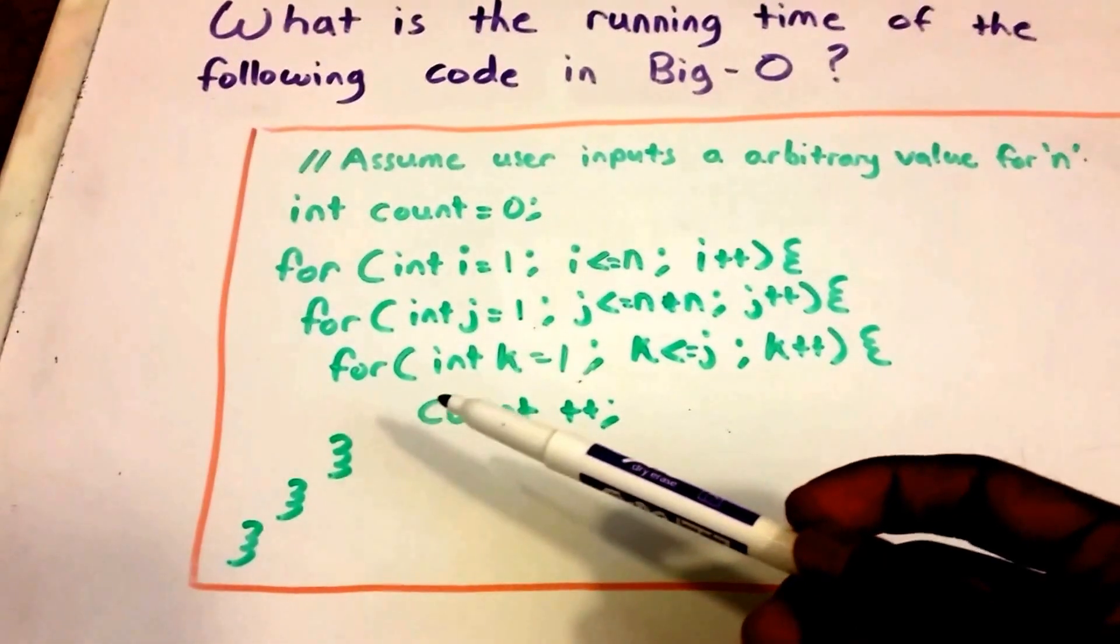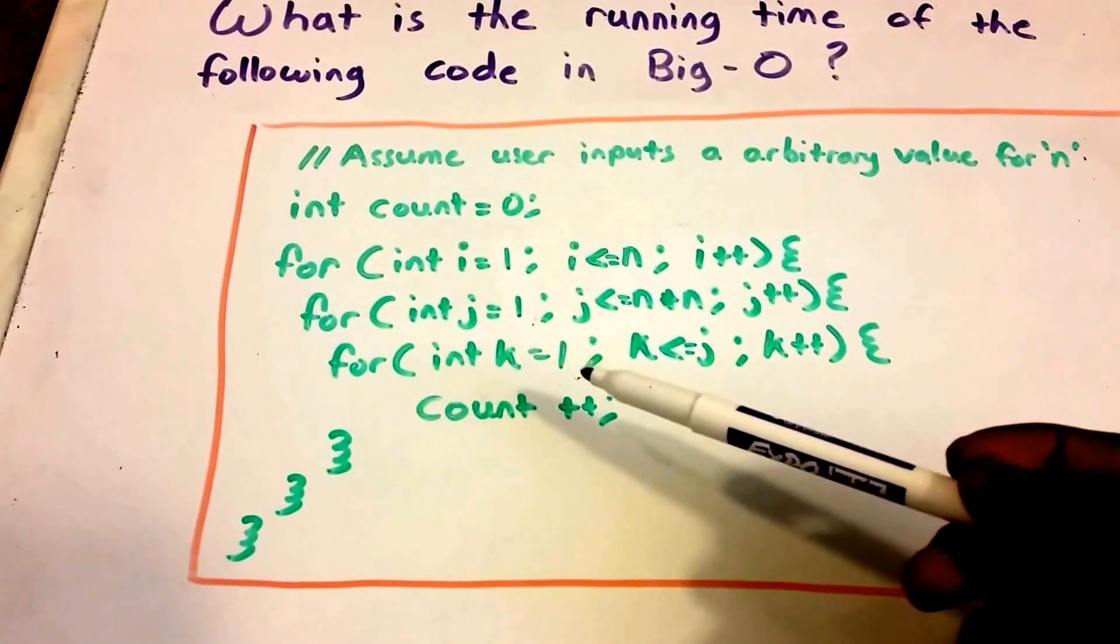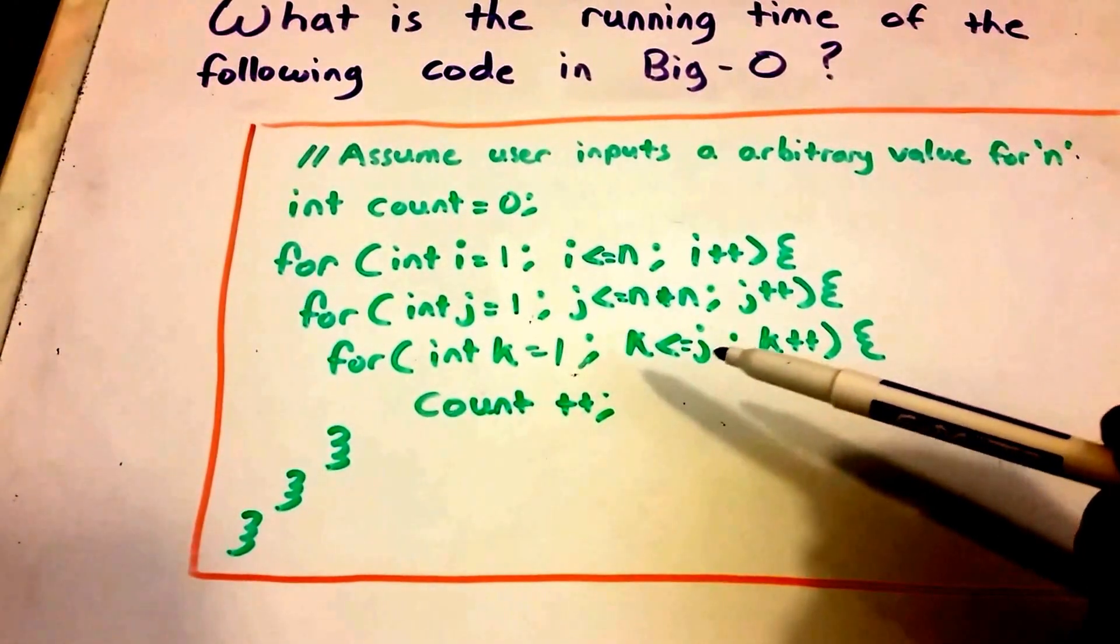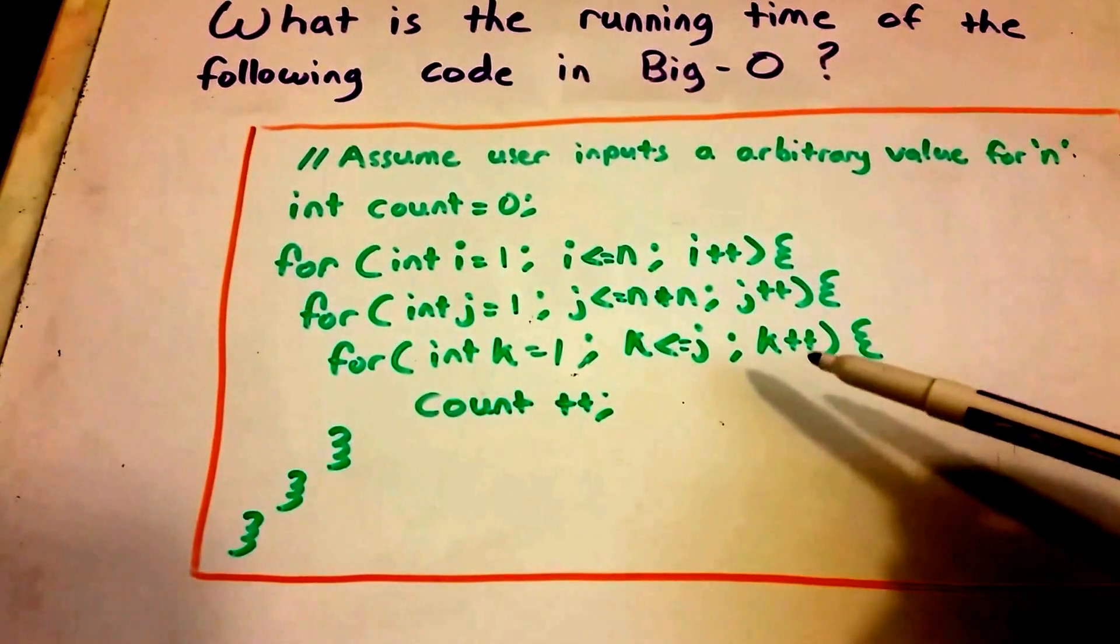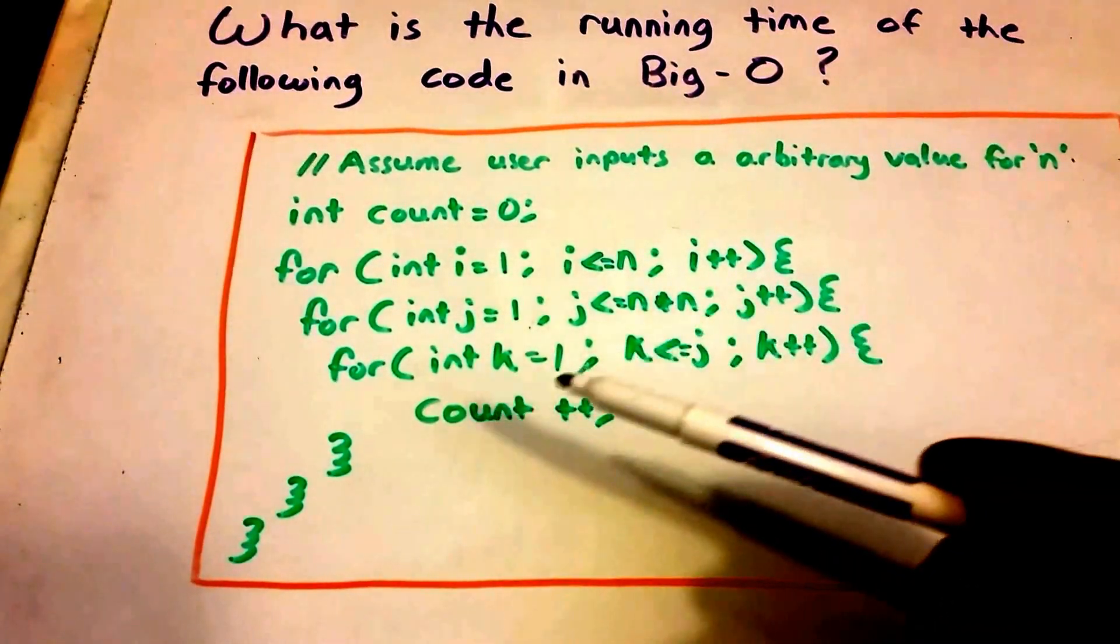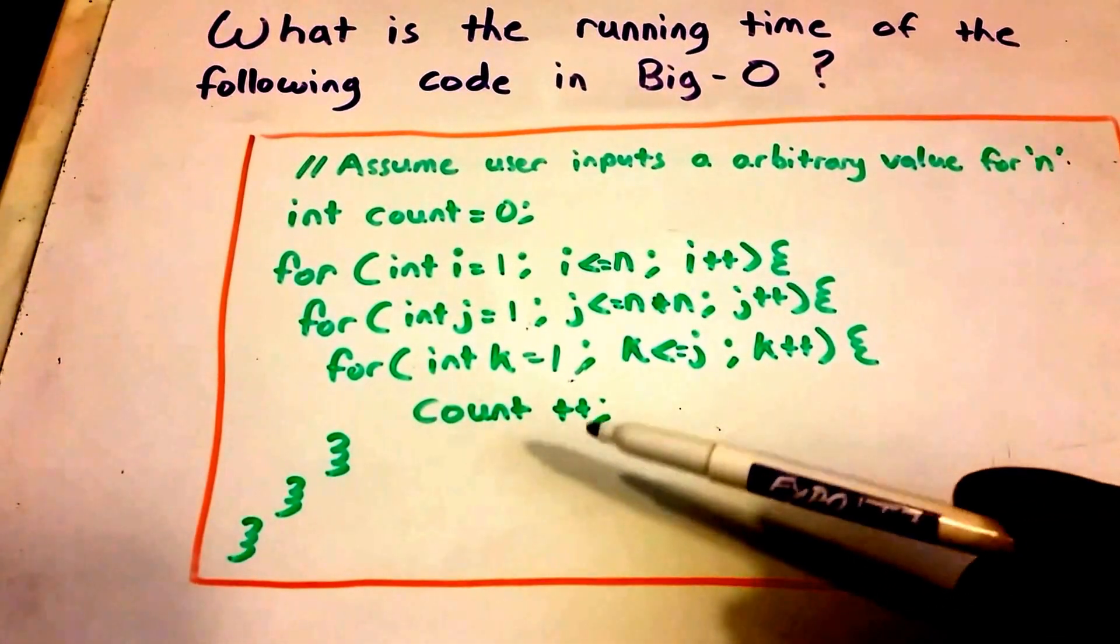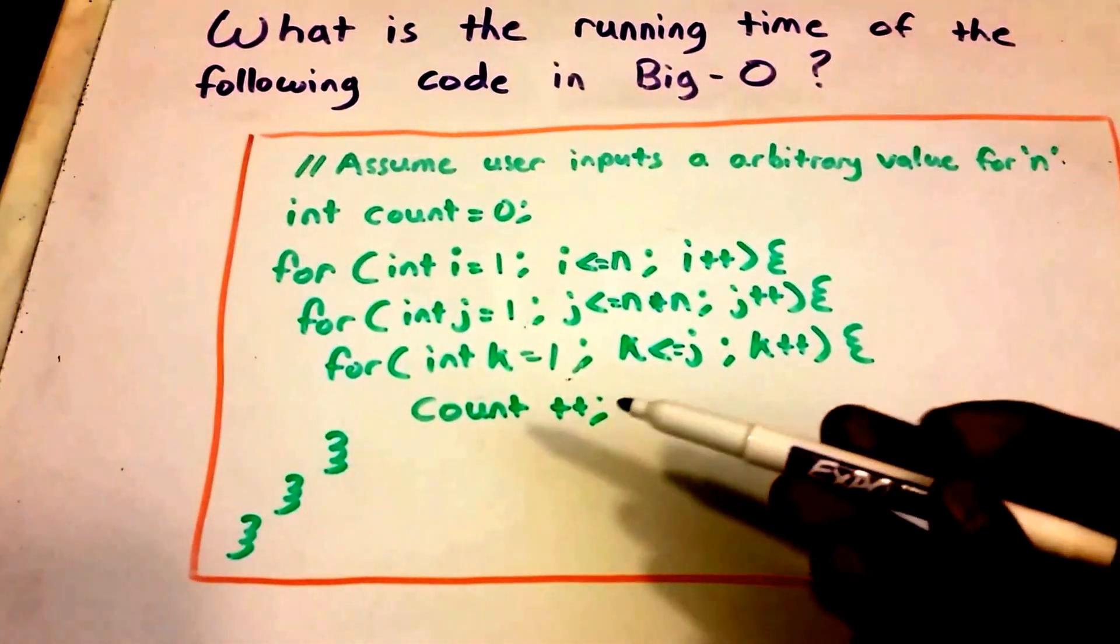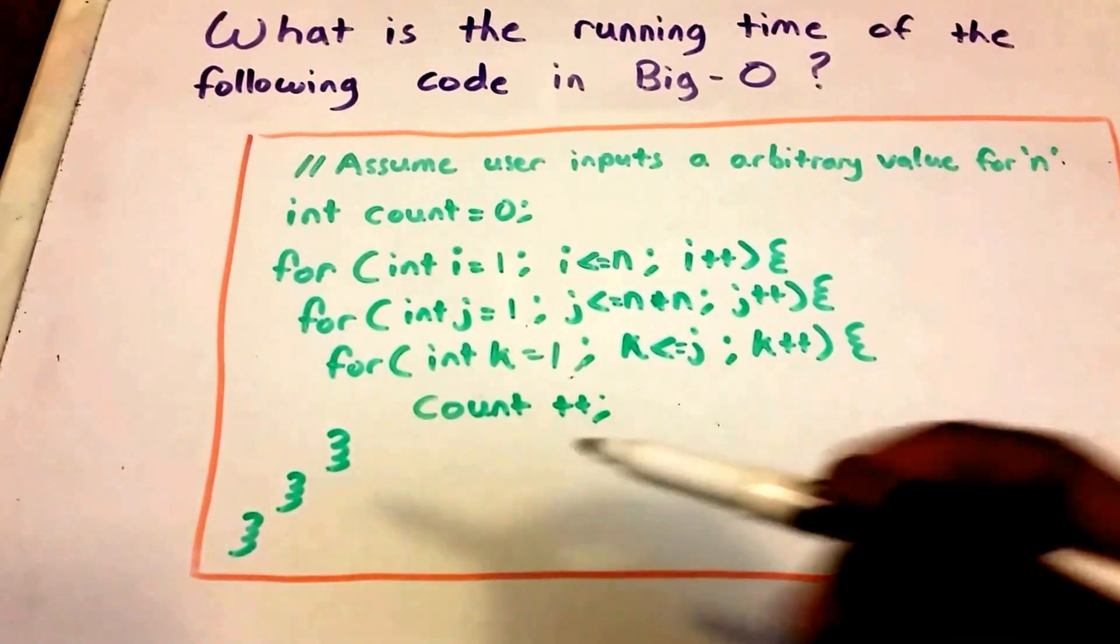Within that loop we have a third loop. It runs from k equals 1 and it's going to run while k is less than or equal to j, and then k increments by 1 each time. Then we have count plus plus, so count's going to increment by 1 every time this inner loop is ran.